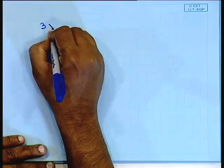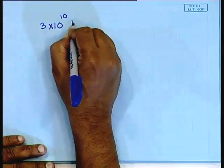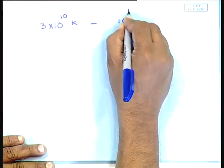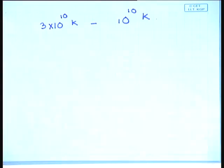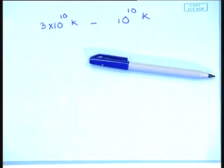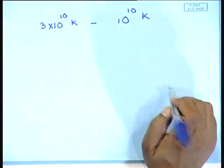Good morning. We are discussing cosmological nucleosynthesis. In the last class I told you how the neutron-proton conversion rate, which decides the neutron fraction, could be calculated. We saw that somewhere between 3×10^10 Kelvin and 10^10 Kelvin, the neutron-proton conversion reaction goes out of equilibrium.